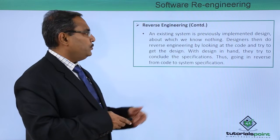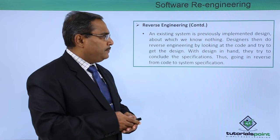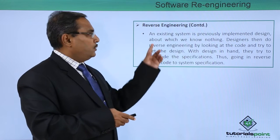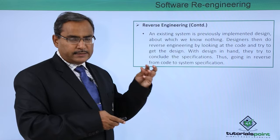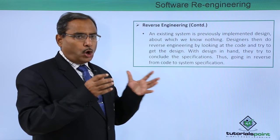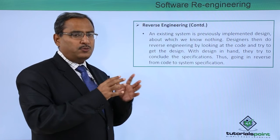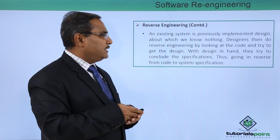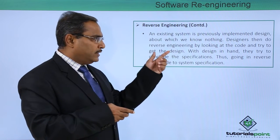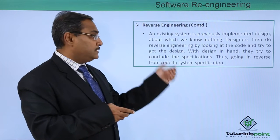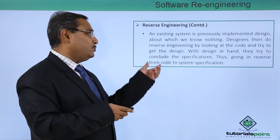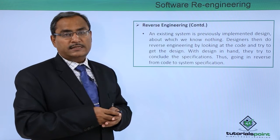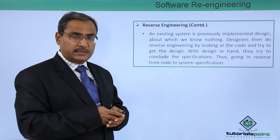An existing system is a previously implemented design about which we know nothing — we do not have any documentation and we have no idea about it, which is why it is very challenging. Designers do reverse engineering by looking at the code and try to get the respective design. With the design in hand, they try to conclude the specifications as well, thus going in reverse from the code to the system specification — that is the main purpose of reverse engineering.